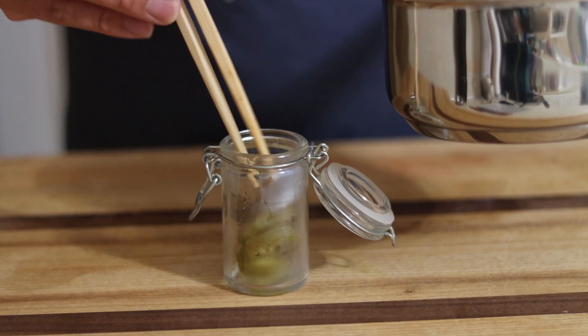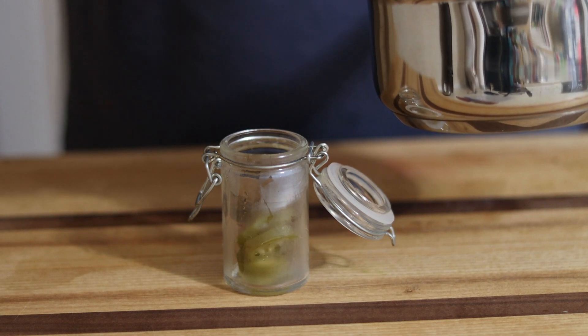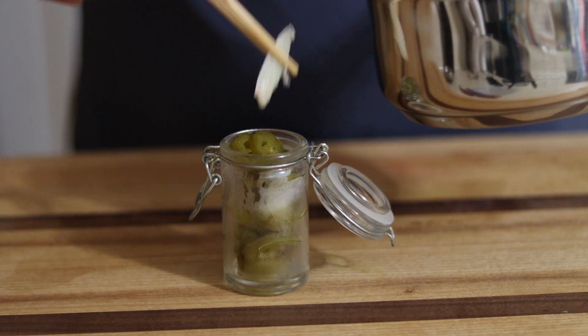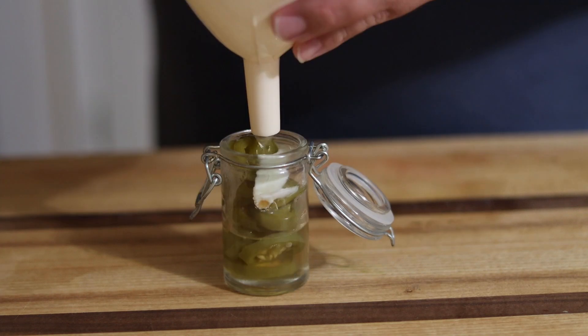Before picking out the spicy discs and placing them in a fancy little jar. We'll drop in a piece of garlic because we can and drown it all with that hot brine, making sure everything's covered without spilling everywhere.